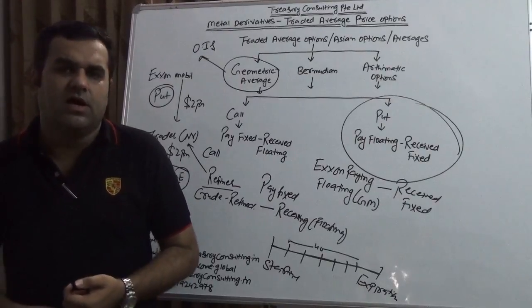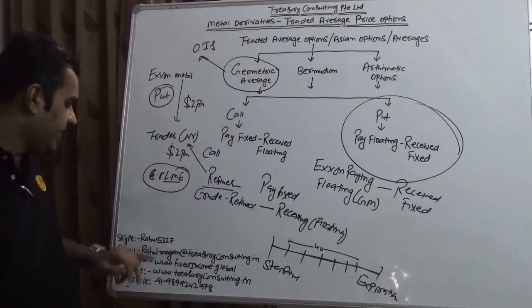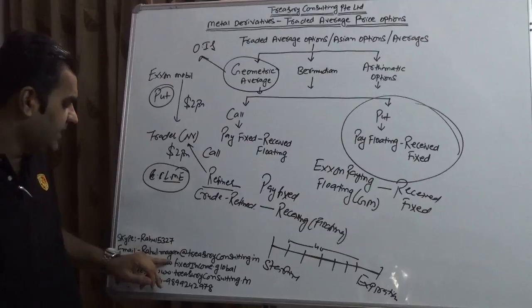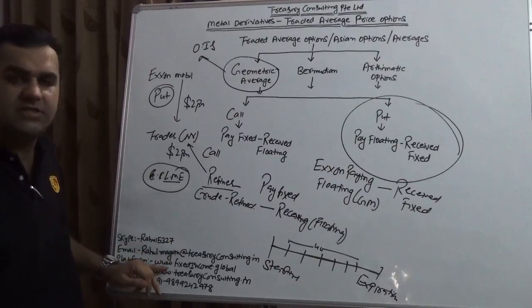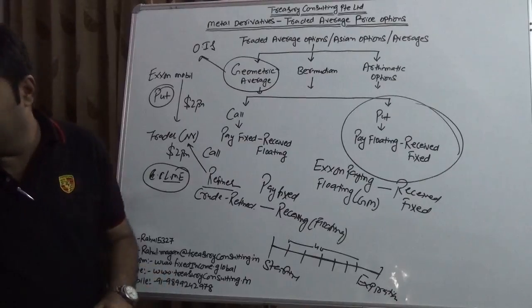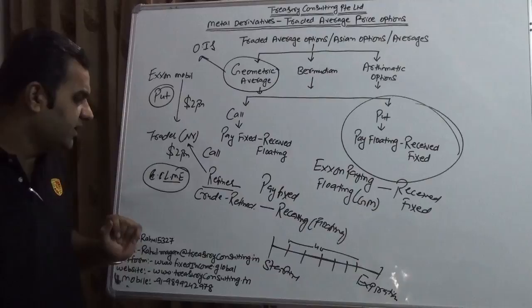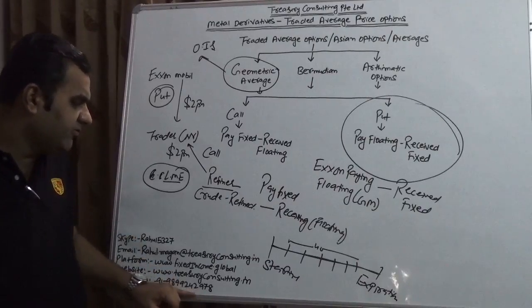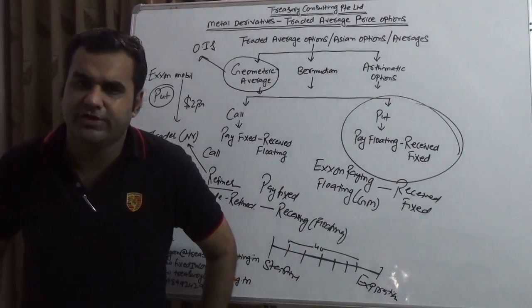If you like this, subscribe to our channel. In case you have any clarifications, our Skype ID is Rahul5327, email is rahul.magan@treasuryconsulting.in, platform is www.fixedincome.global, which can easily be used via mobile phone. Website is www.treasuryconsulting.in, mobile 9899242978. Have a wonderful time, enjoy your day, thank you.